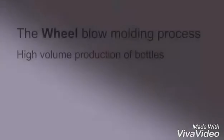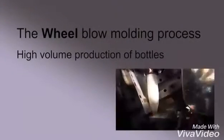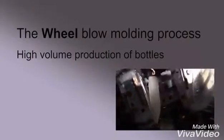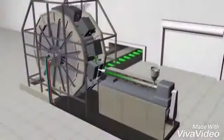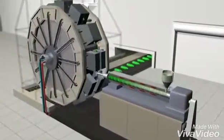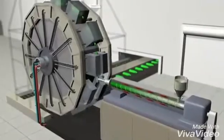A high volume form of blow molding uses many molds mounted onto a continuously rotating wheel mechanism. The extruder creates a hollow tube and as the wheel rotates, each of its molds will open, grab a parison from the extruder die.